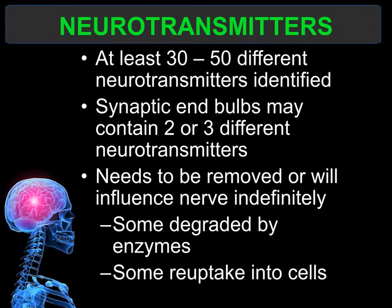There are about 30 to 50 different neurotransmitters identified in the nervous system. One you already know is acetylcholine, which works with skeletal muscles. The synaptic end bulb can contain two different neurotransmitters. The key point is that a neurotransmitter must bind to the correct receptor on the postsynaptic neuron — like puzzle pieces, if they don't fit, they cannot work.